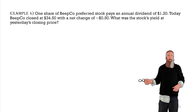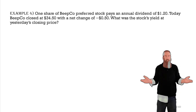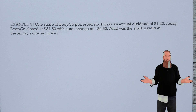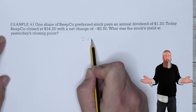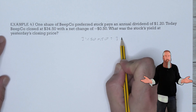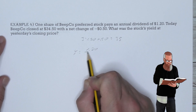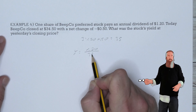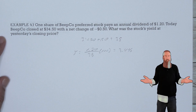One share of Beepco preferred stock pays an annual dividend of $1.20. Today, Beepco closed at $34.50 with a net change of down 50 cents. What is the stock's yield at yesterday's closing price? Using today's closing price and the net change to find yesterday's closing price: $34.50 + $0.50 = $35.00. The yield is $1.20 ÷ $35 × 100 = 3.4%. At yesterday's close, the yield was about 3.4%.